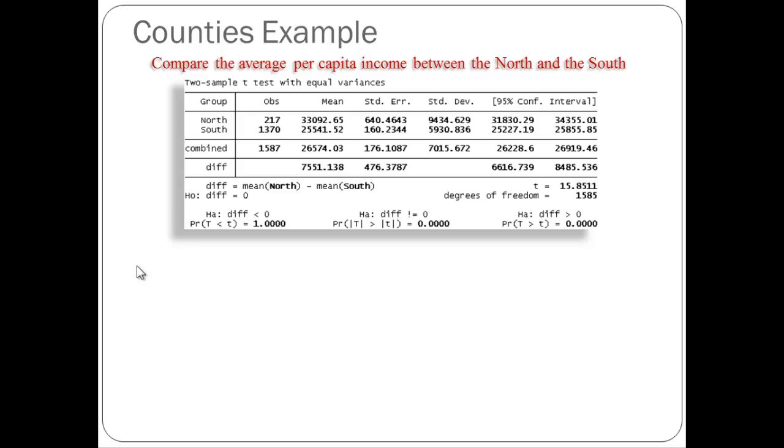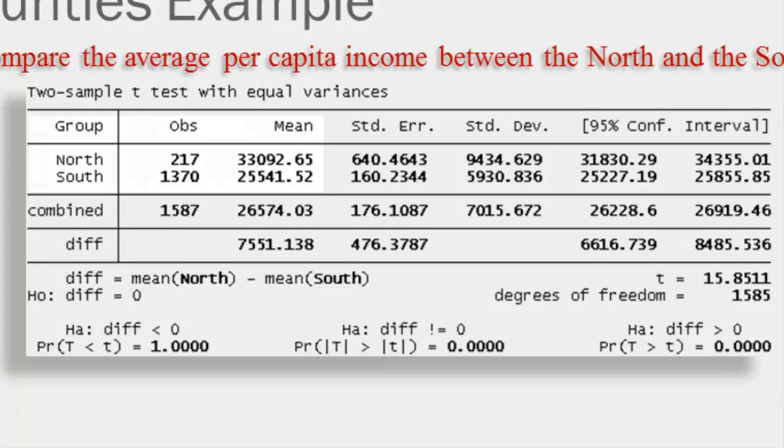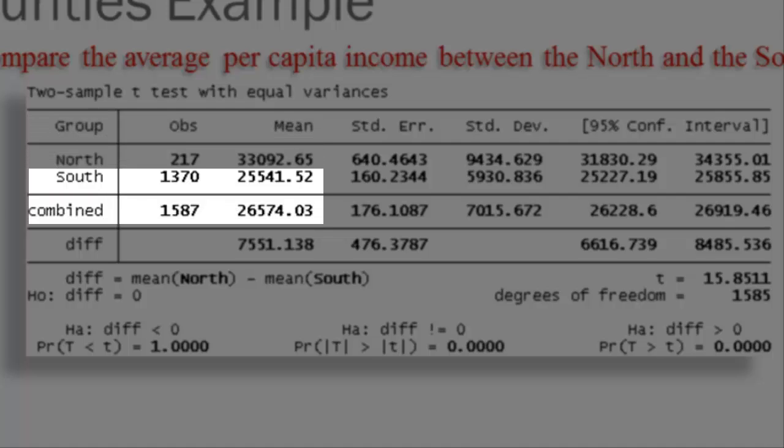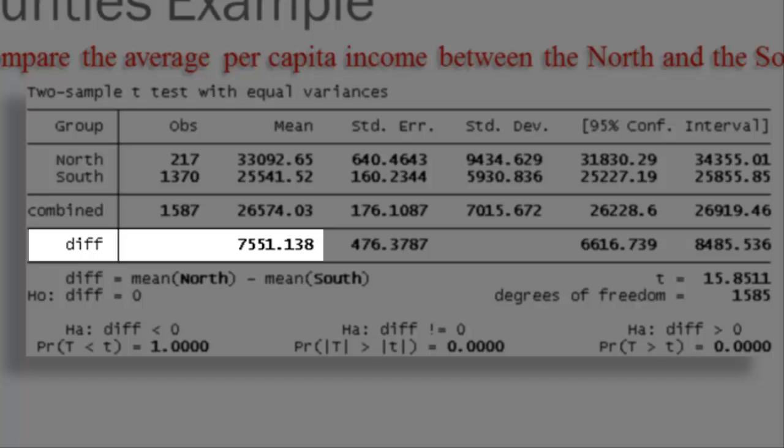The first thing I would look at when I look at this kind of output is the two different means. We can see that the mean for the north is $33,092.65. I'm going to start rounding these numbers because the notion of having county-level per capita income accurate to the penny is really not correct. We know that these are estimates at best. In the south, the average income is $25,541.52. I would then look at the difference between these two regions of the country. Looking down that column labeled mean, the last number is $7,551. That indicates the difference between the average per capita income in the north and the south. Our statistical question is, is that difference statistically significant?